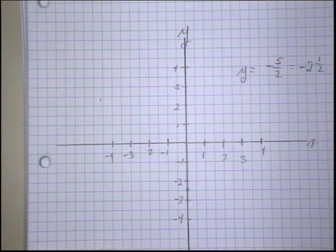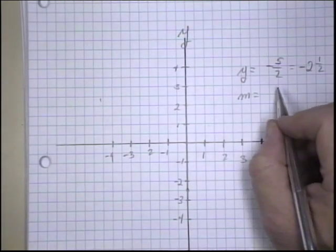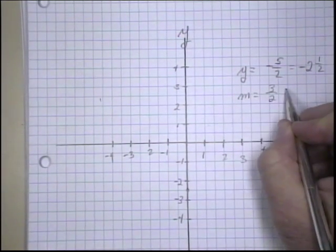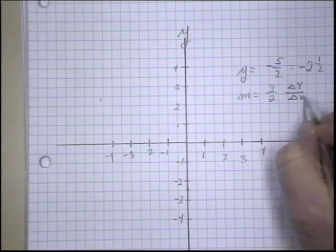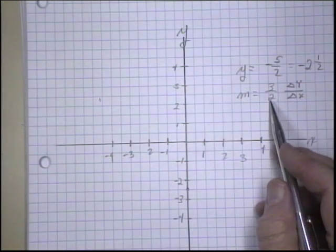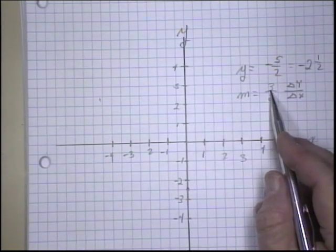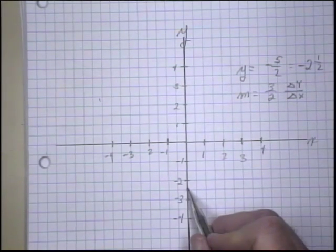So I know the point, and I also found my slope, M, to be equal to 3 halves. And remember, this was the change in y over the change in x. So I'm going to change y 3 for every two changes in x, and these are positive. So I'm going to go up here, three units.